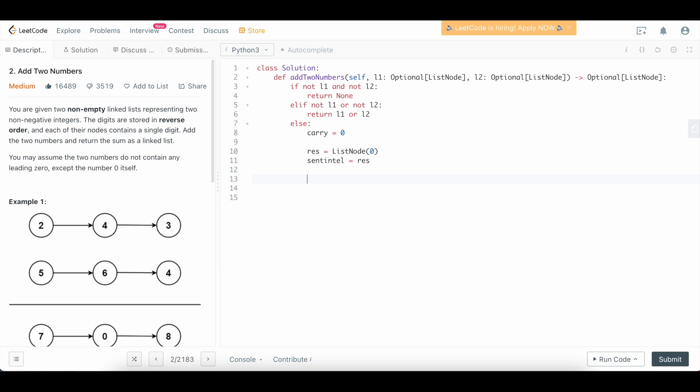So now what we need to do is we need to loop through the linked lists and basically go until both of them are exhausted and do the summations. So we're going to say while l1 or l2, so basically while one of them is still not empty, we're going to say l1_val is going to equal l1.val if l1.